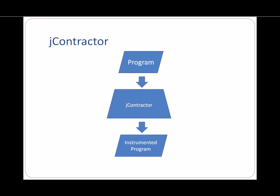When a program is run using JContractor, JContractor instruments the program bytecode as it is loaded into the Java Virtual Machine. JContractor adds code to check contracts at runtime. This is configurable, so contracts can be enabled during development and then disabled in a production system to avoid the performance overhead of contract checking.